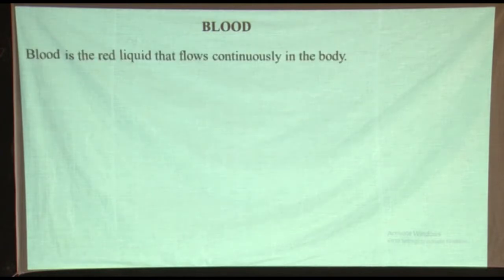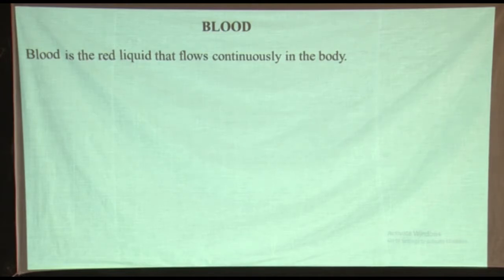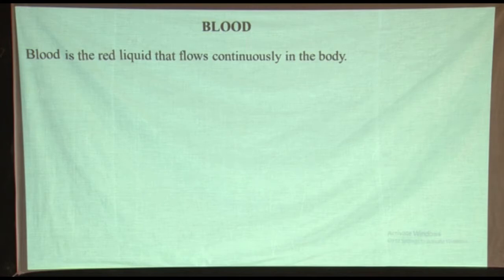Specifically looking at blood: from the last time we talked about blood and we said that simply blood can be the red liquid found in the body. That can be a simple understanding of blood, but still we can also say blood is a liquid that flows continuously in the body. You find it has different components — the white blood cells, red blood cells, and so on.